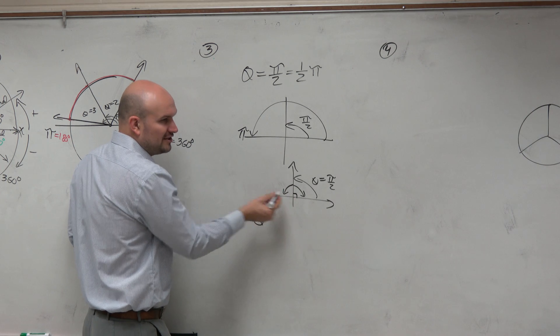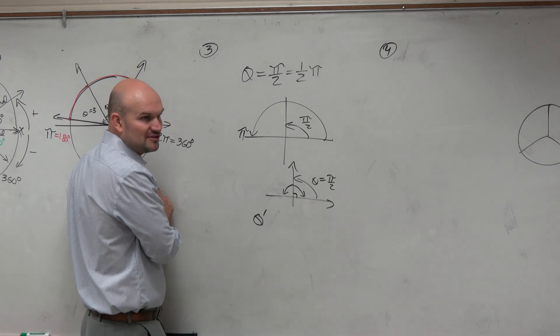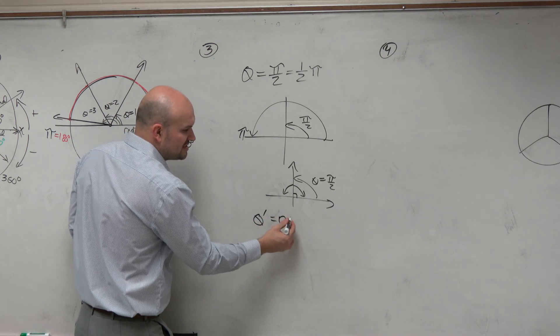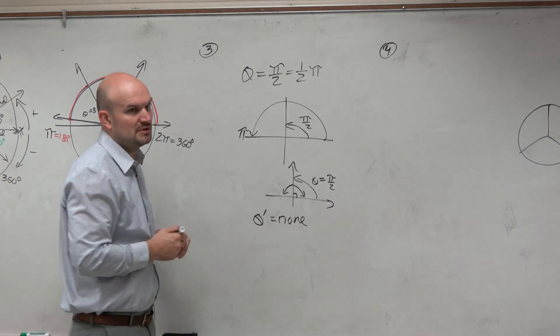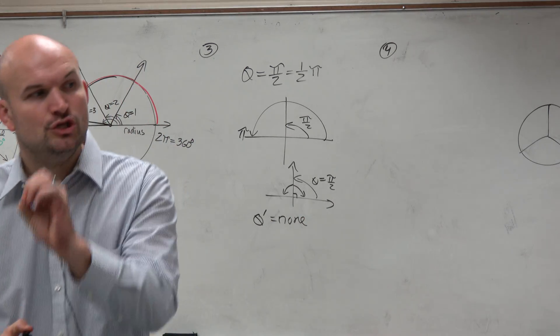No, guys. We already know this is 90 degrees. That's a right angle, right? Right angles are not acute. So there does not exist a co-terminal angle. Or, I'm sorry, a reference angle. OK? It has to be acute.